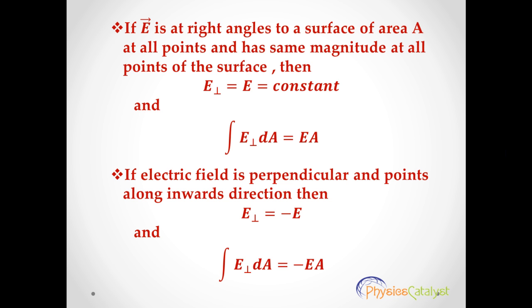Now if electric field is at right angles to the surface of area A at all points and has same magnitude at all points of the surface, then we have this E perpendicular equal to a constant, and this integral E⊥·dA equals EA.